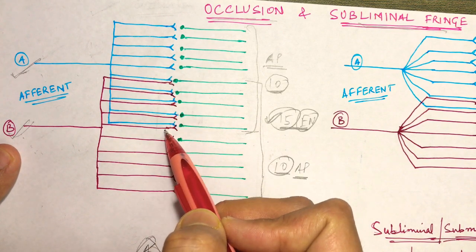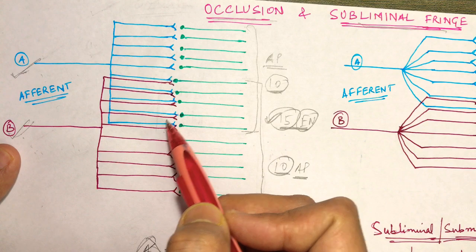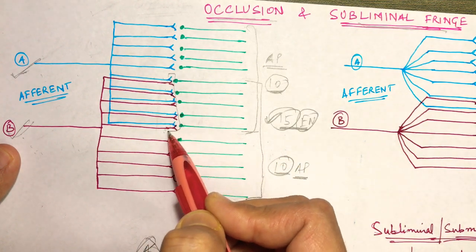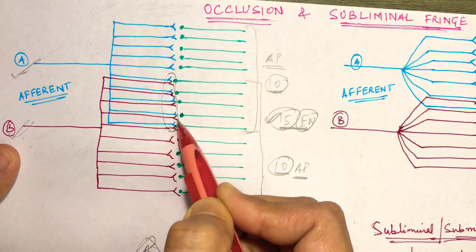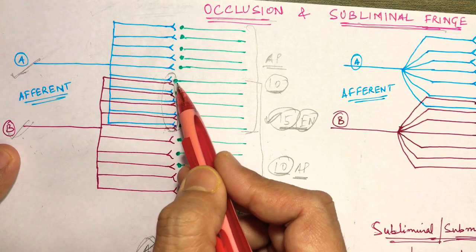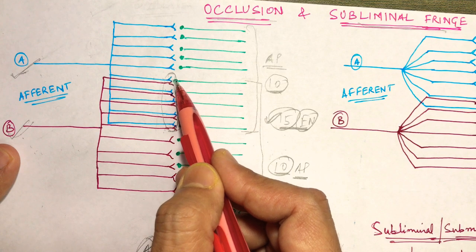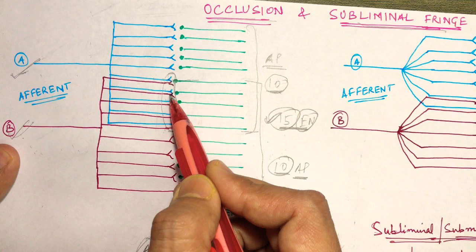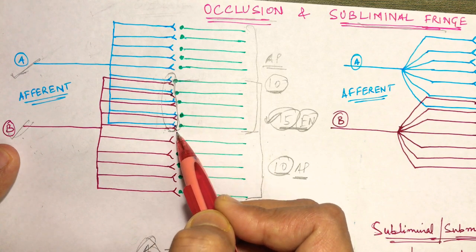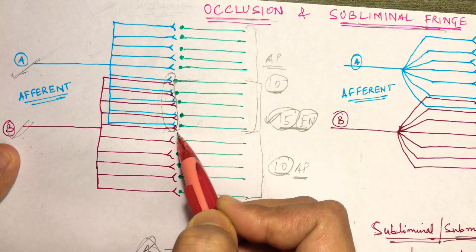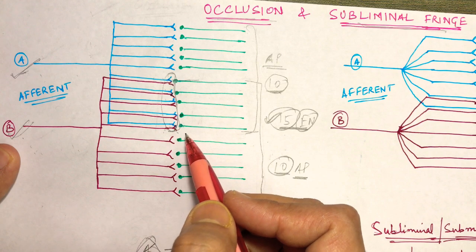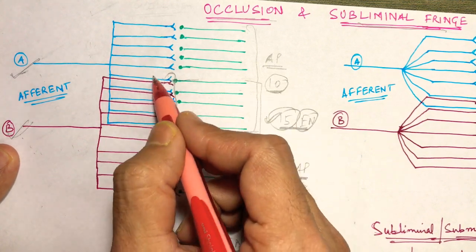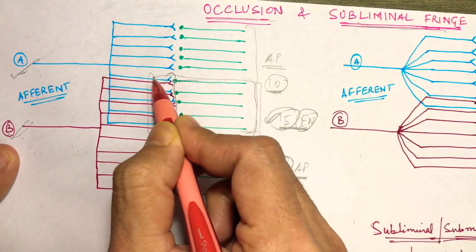What is the reason for that? The reason is these central five branches — if you count the red ones: 1, 2, 3, 4, 5, or the blue ones: 1, 2, 3, 4, 5 — these central five branches of A and B are stimulating the same efferent neuron. So we can say there is overlapping of efferent neurons in the central distribution, and that is called occlusion.